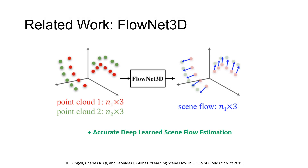One such method is FlowNet3D, which uses a PointNet architecture to achieve state-of-the-art results on real data. These methods, however, require large amounts of labeled data to train, and labeling real point clouds with dense motion annotations is an extremely time-consuming process. We propose a self-supervised training pipeline, which allows us to train on large amounts of unlabeled real data while avoiding the high cost of human annotation.